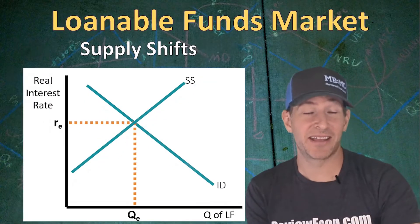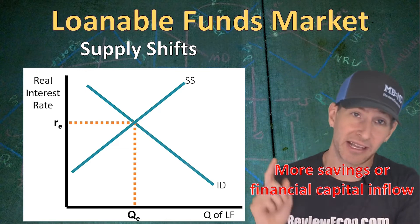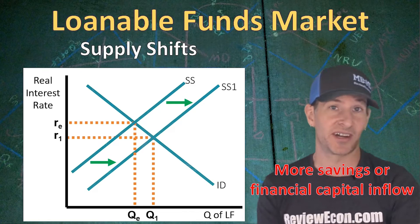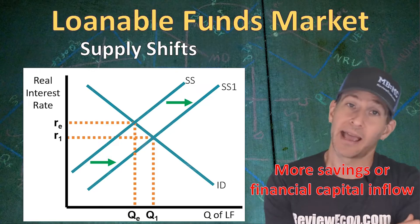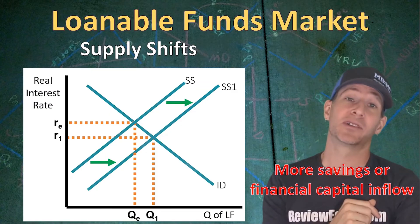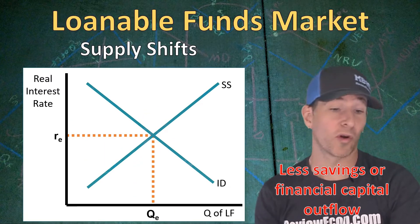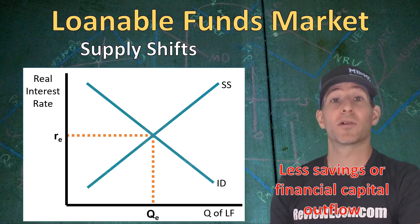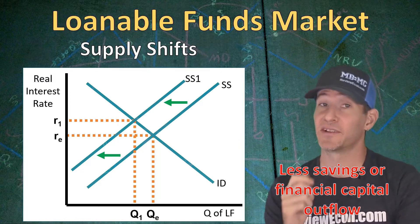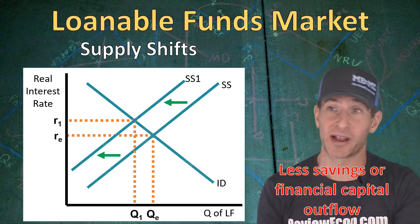Let's see how supply shifts can impact the real interest rate and quantity of investment. If there's an increase in the savings supply or a financial capital inflow from foreign investors, that shifts the supply of loanable funds to the right, decreasing the real interest rate and increasing the equilibrium quantity of loanable funds. That means we'll have an increase in gross investment, which will increase the long-run economic growth of this economy. If instead we had less savings or a financial capital outflow, that produces a leftward shift of the savings supply curve — the real interest rate increases and the equilibrium quantity of loanable funds decreases, causing less gross investment and decreasing the growth rate.